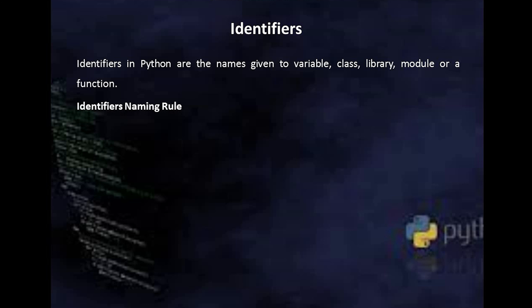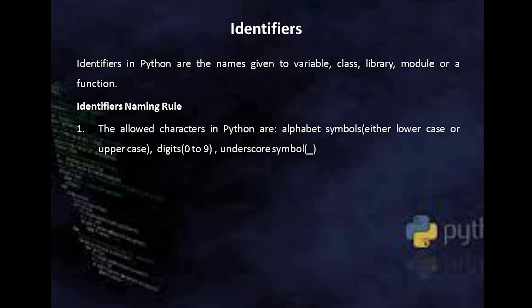What are the identifier naming rules? The first rule is: all identifiers can be made up of a combination of characters. Those characters can be lowercase or uppercase alphabets, digits, and underscore. So the allowed characters in Python identifiers are alphabets (lowercase or uppercase), digits, and underscore.